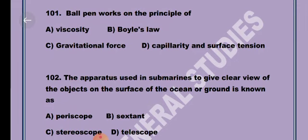Question 2. The apparatus used in submarines to give clear view of the objects on the surface of the ocean or ground is known as Option A, Periscope.